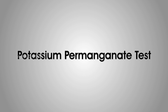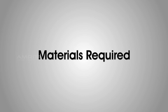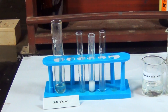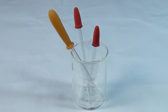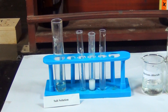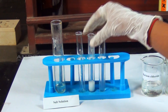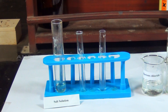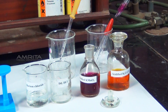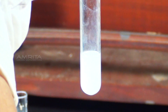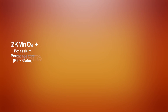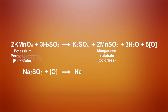Potassium Permanganate Test. Materials Required: Precipitate of barium sulphite, acidified potassium permanganate solution, test tube, and a dropper. Procedure: Take the second part of the white precipitate of barium sulphite obtained in the barium chloride test. To this, add a few drops of acidified potassium permanganate solution using the dropper. The pink colour of potassium permanganate is discharged because, in the presence of dilute sulphuric acid, sulphite reduces potassium permanganate to colourless manganese salt, and sulphite undergoes oxidation to form sulphate.